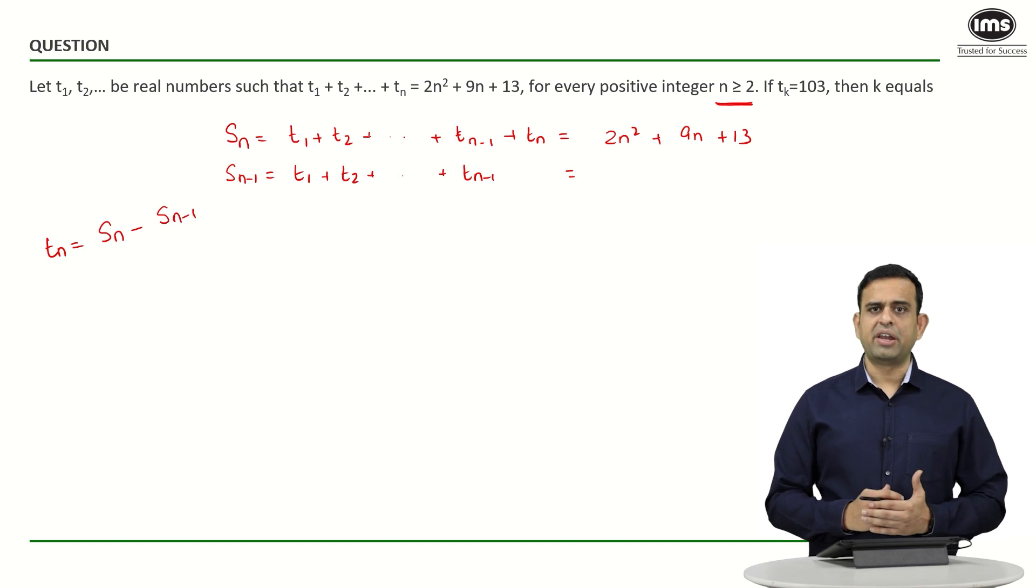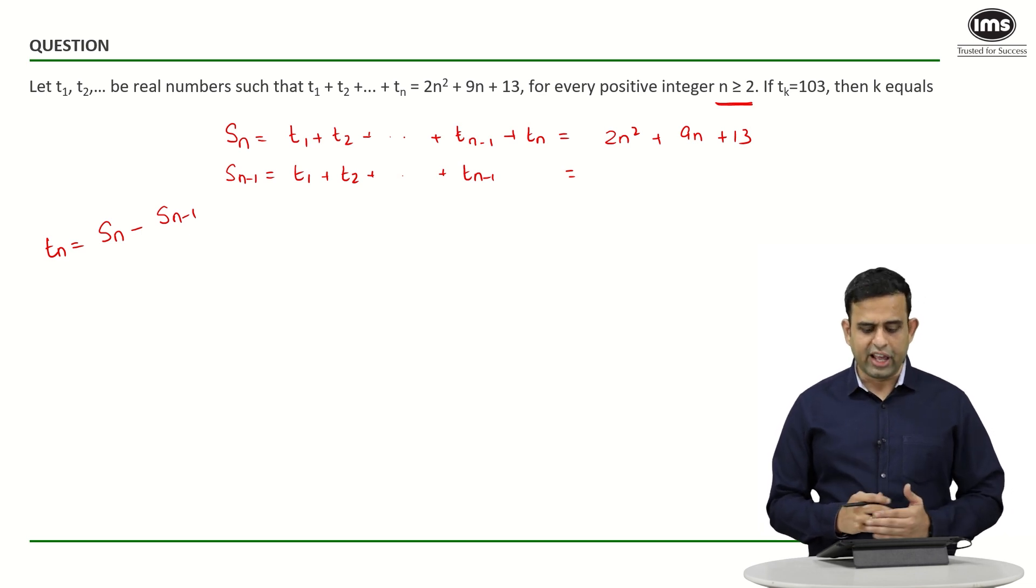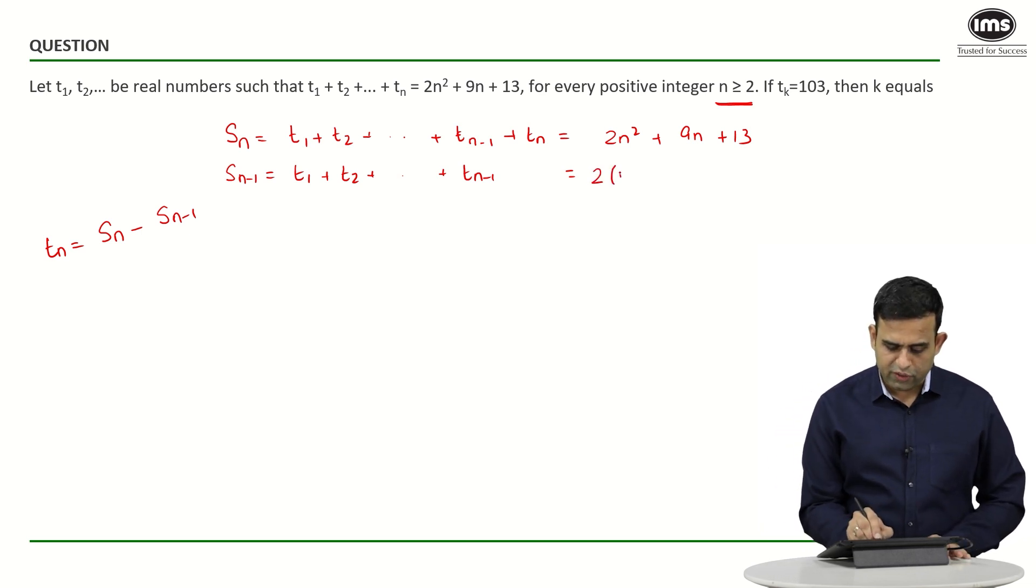And how will I find S_(n-1) if I know Sₙ? I can simply replace n as n-1, and if I do so I will get 2(n-1)² + 9(n-1) + 13.